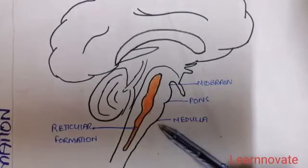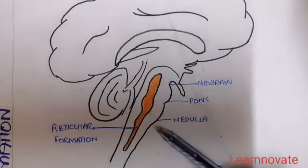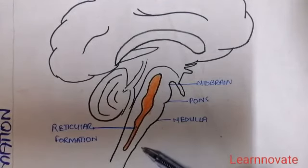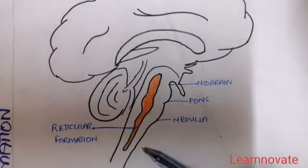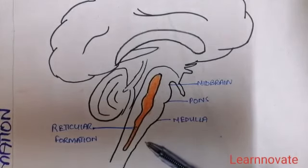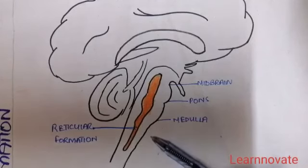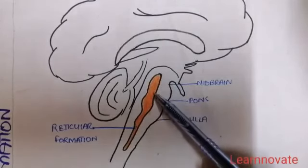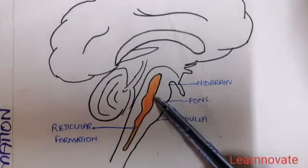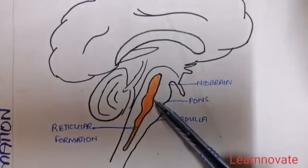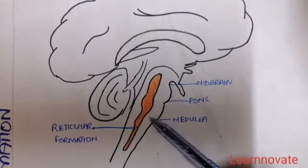The second important function is that the reticular formation controls skeletal muscle activity via the reticulospinal tract. Third, it controls facial expressions and cranial nerve nuclear groups through the reticulobulbar fibers. It also controls autonomic nervous system activity by regulating emotions and the biological clock — the circadian rhythm — because of its connections with the hypothalamus superiorly, and with the autonomic nervous system through the craniosacral and thoracolumbar pathways.